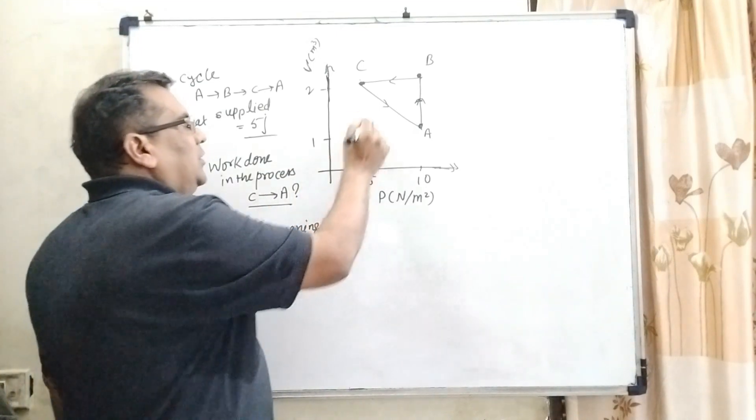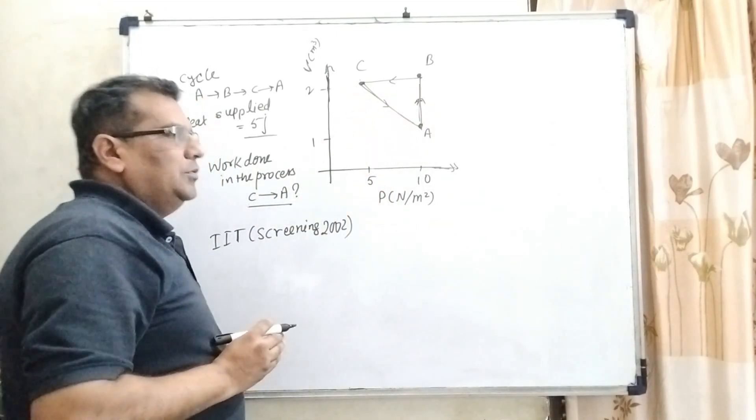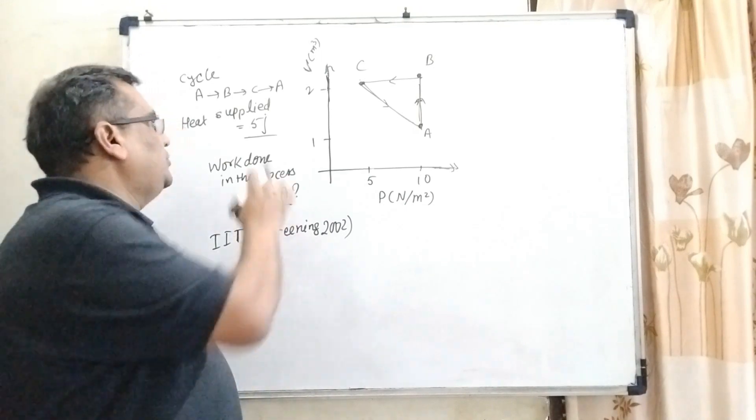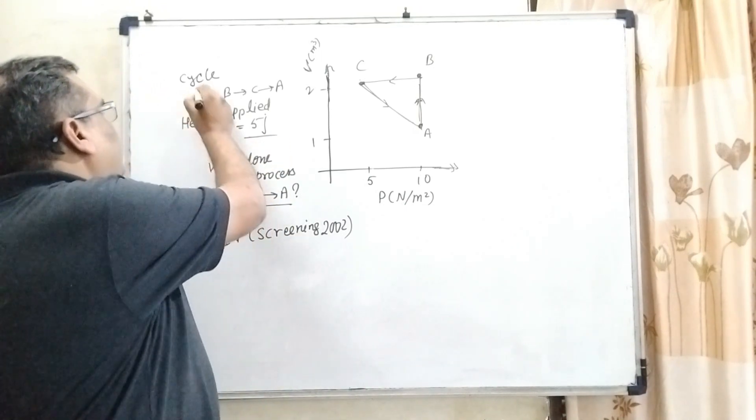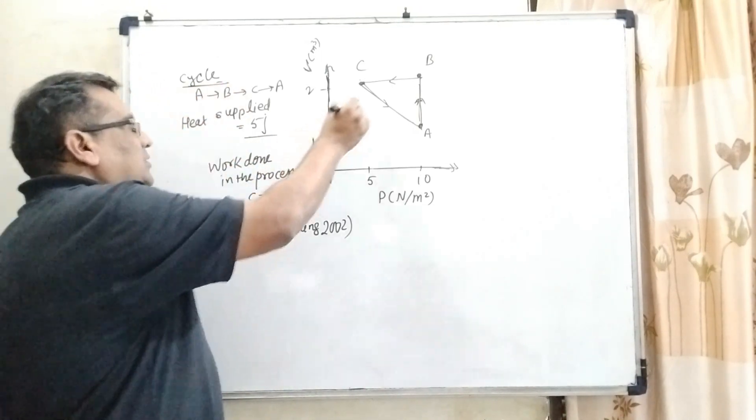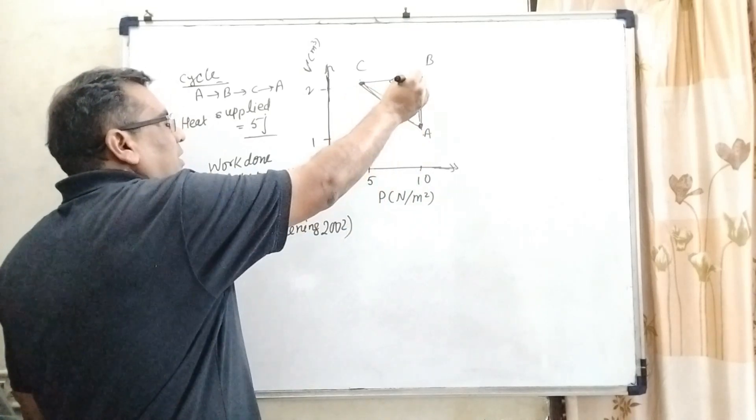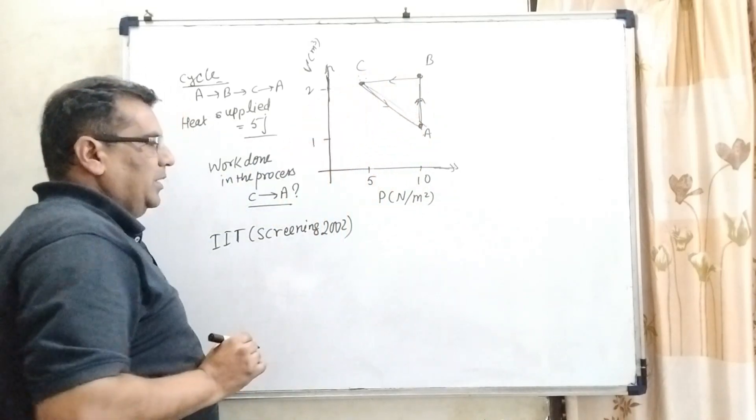Here we have given the energy to this cyclic process, that is 5 joules. And here we have given the cycle of this process going A to B, B to C, and C to A.